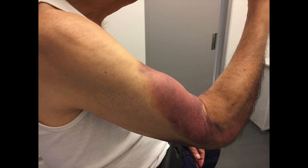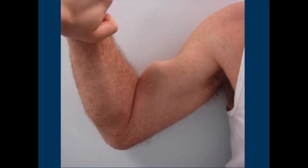It looks like Popeye from those old cartoons. Here are images of a patient who has an acute rupture of their proximal biceps. You can see the deformity and the ecchymosis. And here's another patient with a more chronic deformity — you can see the Popeye feature of the biceps tendon.